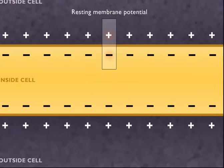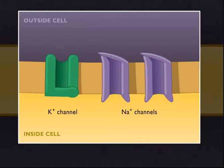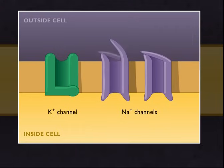A nerve impulse begins when a stimulus disturbs the plasma membrane on a dendrite, causing sodium channels to open. Sodium ions flow into the cell, lessening the charge difference at that location.